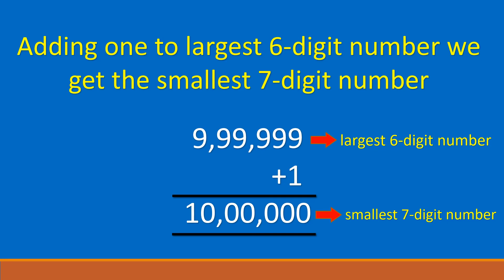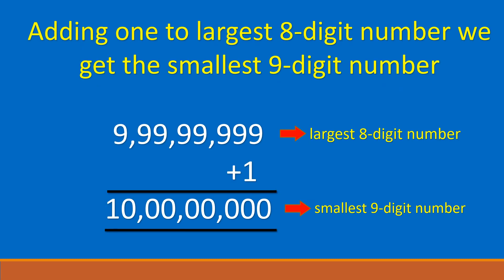Now I will show you a trick. Adding 1 to the largest 6 digit number, we get the smallest 7 digit number. The largest 6 digit number is 9,99,999. Plus 1 is 10,00,000, which is the smallest 7 digit number. Let's see one more example. Adding 1 to the largest 8 digit number, we get the smallest 9 digit number. The largest 8 digit number is 9,99,99,999. Plus 1 is equal to 10,00,00,000, which is the smallest 9 digit number.